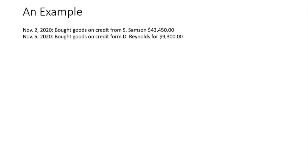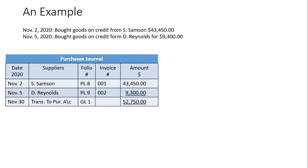So let's look at an example. We have two transactions here. The first transaction says November 2, 2020 — bought goods on credit from S. Sampson for $43,450. And then for November 5, for the same year, bought goods on credit from D. Reynolds for $9,300. This is how our purchases journal would appear. We have different rows and columns, and the columns have headings: we have the date column, obviously for the date, and a column to record the suppliers' names.